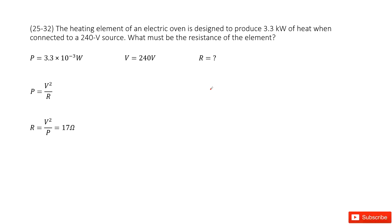So we look at the heating element of an electric oven. We know the power for this element is about 3.3 kilowatts. So you write it there and convert the unit kilowatts to the international system unit.